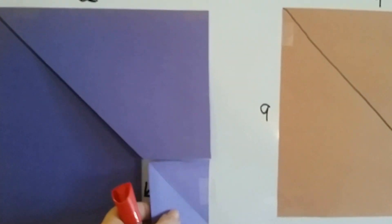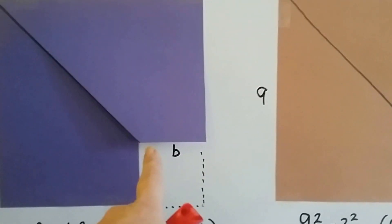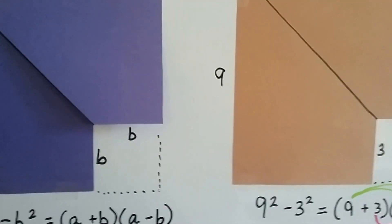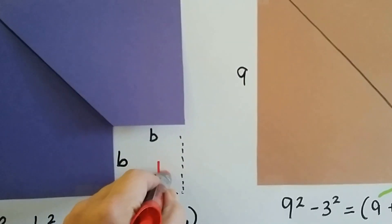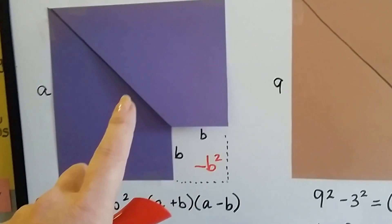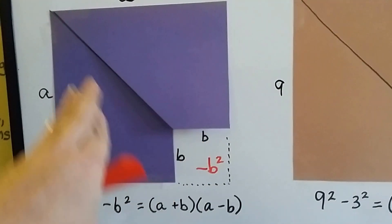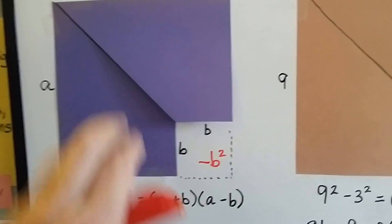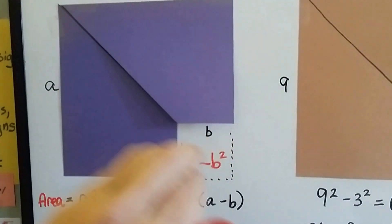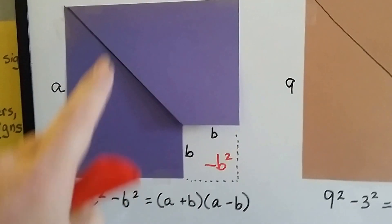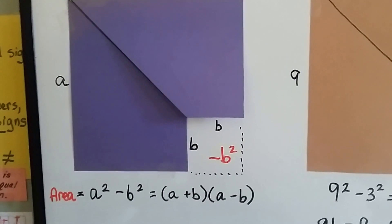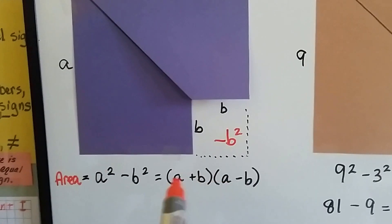But what if we took away a little piece, and this piece was length b, and this piece was length b? Wouldn't we get minus b squared? So to find the difference between this blue area and the piece we took away, the difference of the two squares, the difference of the amount of area of the two squares, we could do a squared minus b squared. And we could factor these.